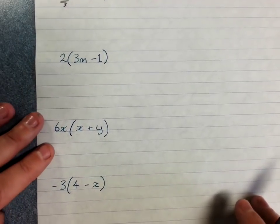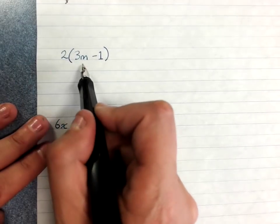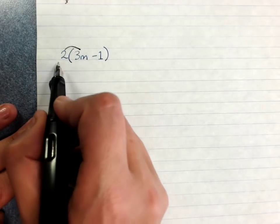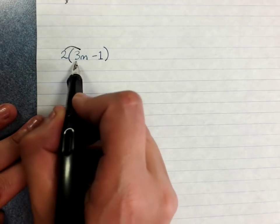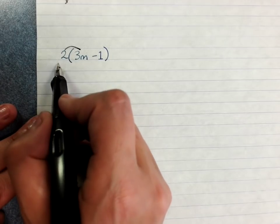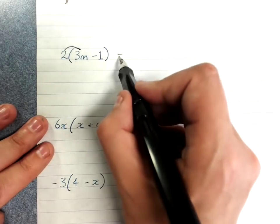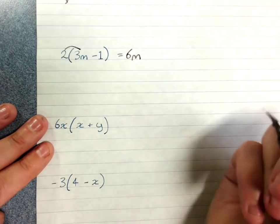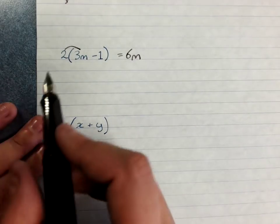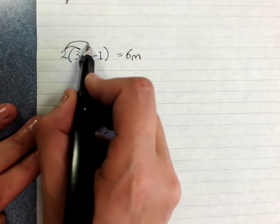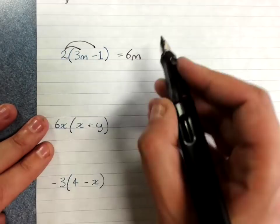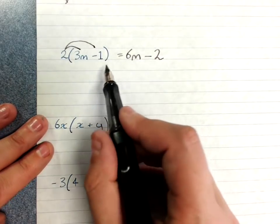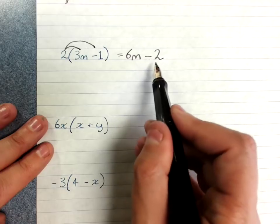Next question: 2 outside of 3m minus 1. Draw your arrow from the term outside the front to the first term in the brackets. 2 times 3m, that is 6m, which we know by learning to multiply algebraic terms. Draw your second arrow. 2 times negative 1 is negative 2, and so my expanded answer is 6m minus 2.